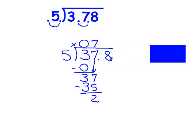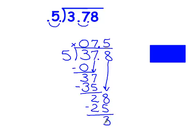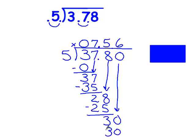Down comes my 8, and I'm going to float that decimal point straight up. I can get 5 groups of 5 out of 28. 5 times 5 is 25. I have 3 left over, and you can't have a remainder when you have decimal points, so you need to add a zero and bring it down. And I can get 6 groups of 5 out of 30. And the correct answer is 7 and 56 hundredths.